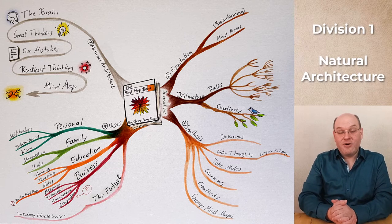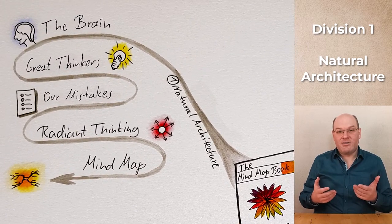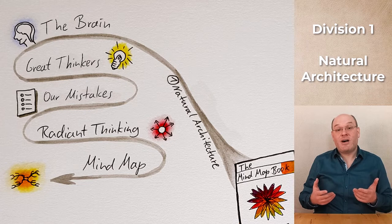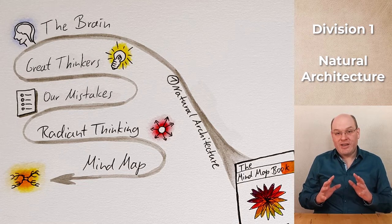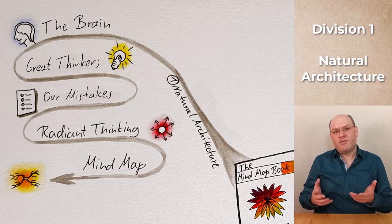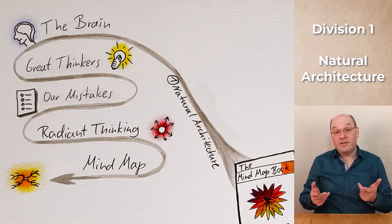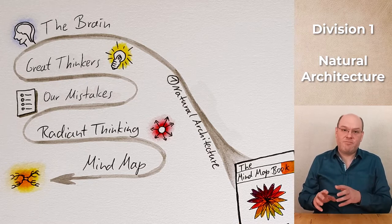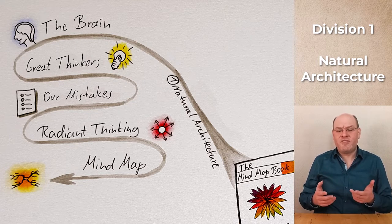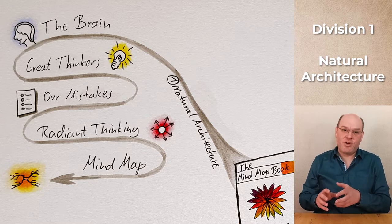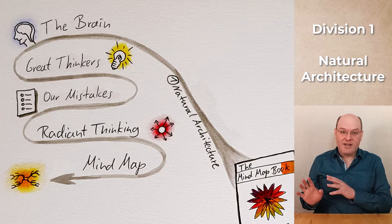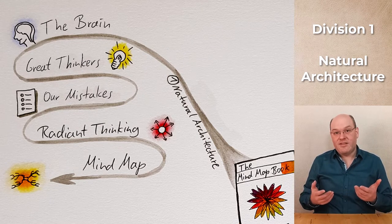The first division is called Natural Architecture. Here we learn about some basics and background – we learn about the brain and some brain research. The book is a bit older and brain research advances quickly, so some of the content is probably outdated. There is some discussion of the left and right parts of the brain, which usually ends in nonsense like left brain types and right brain types. But Tony Buzan does nothing of the sort, so I didn't notice any serious mistakes.